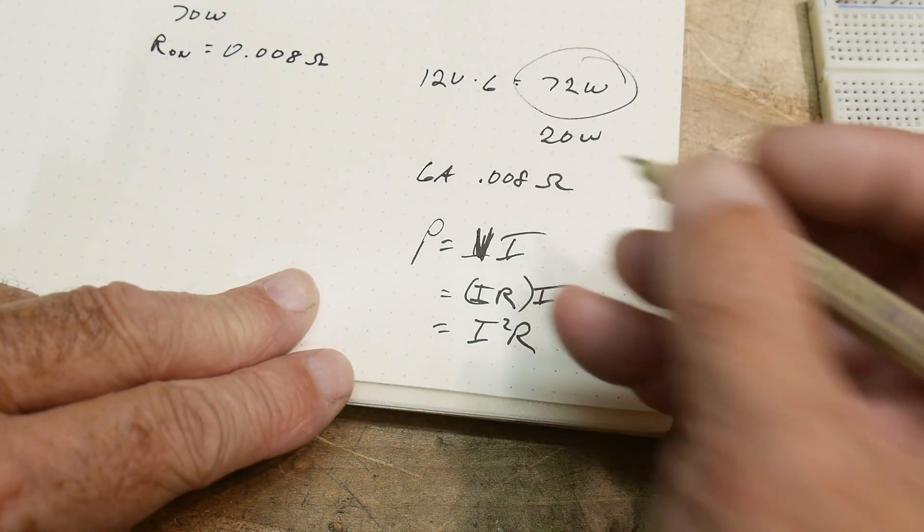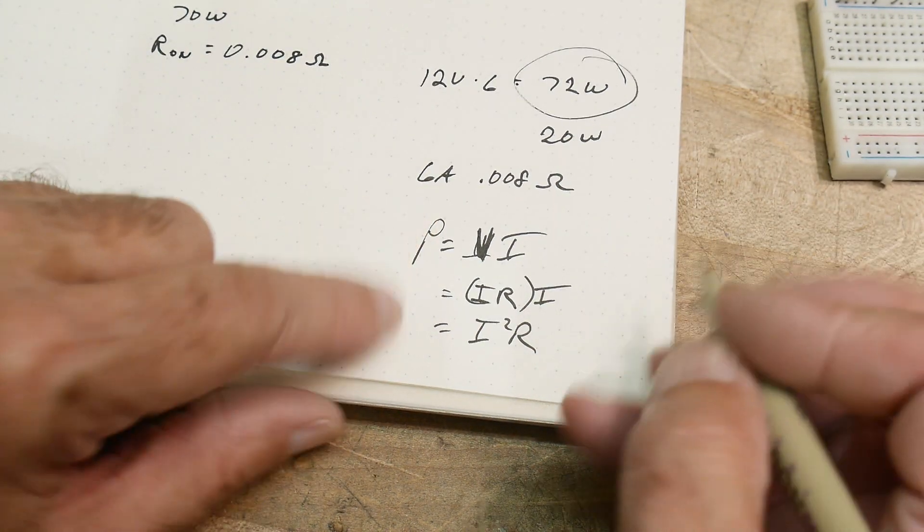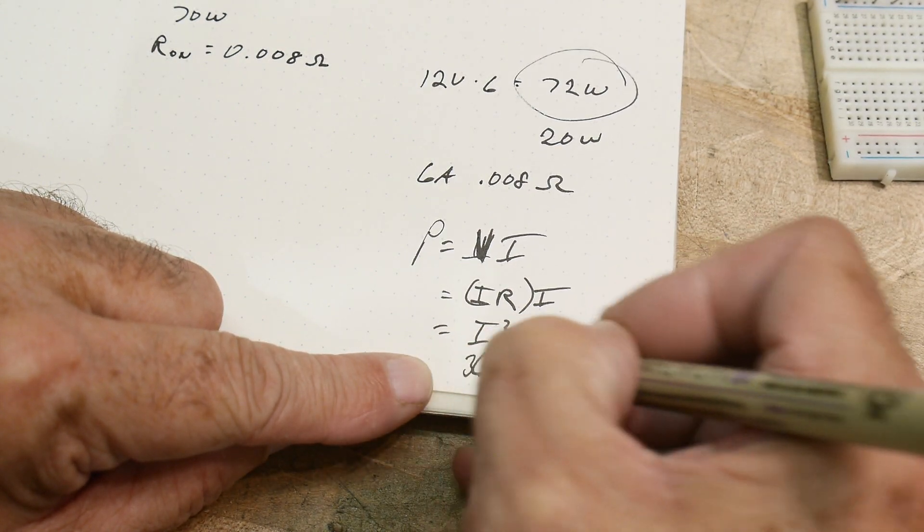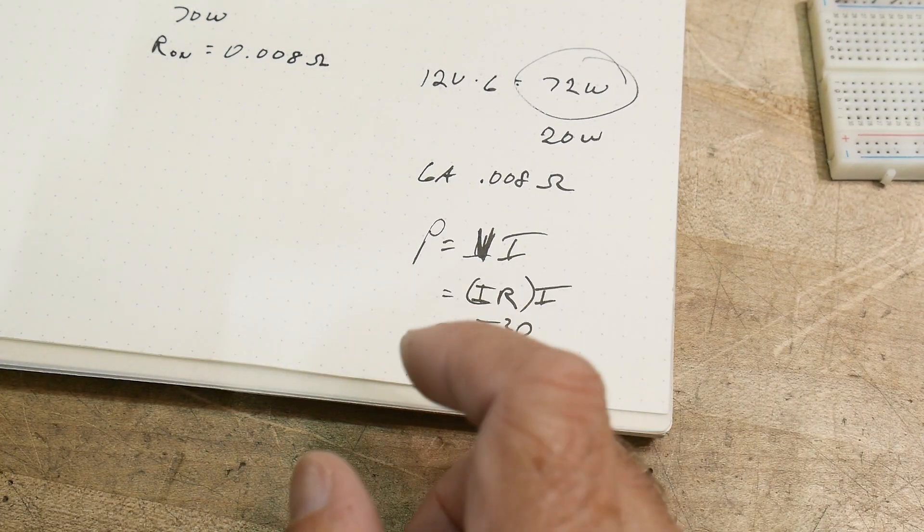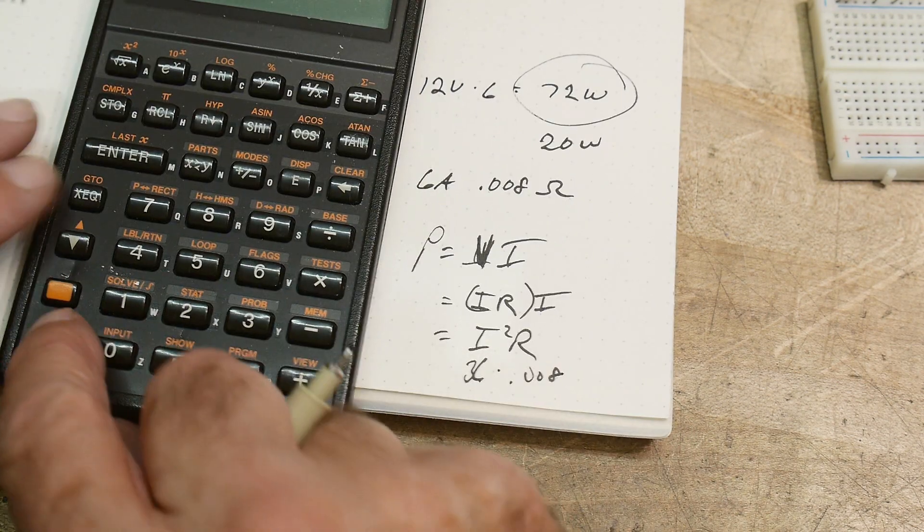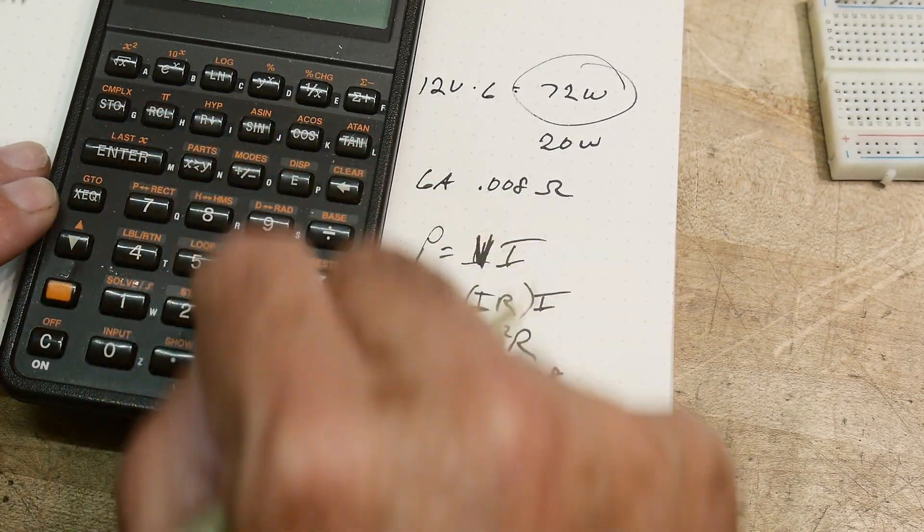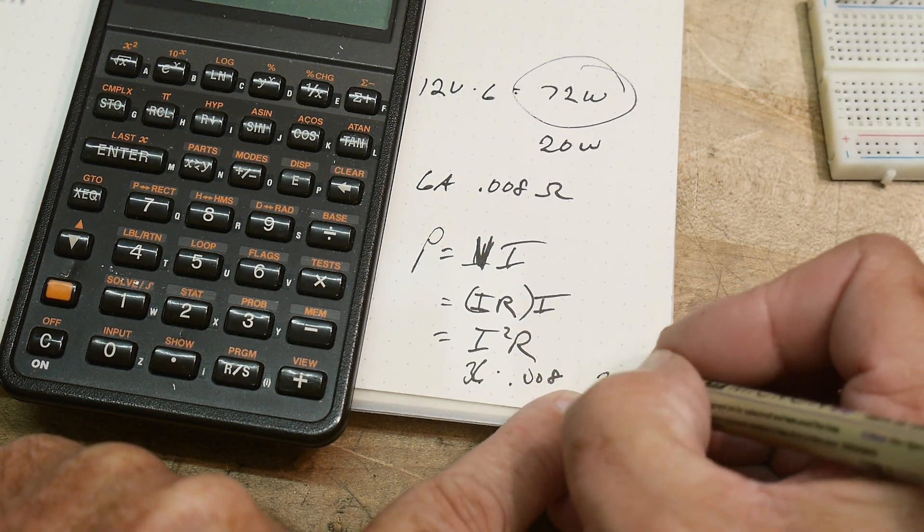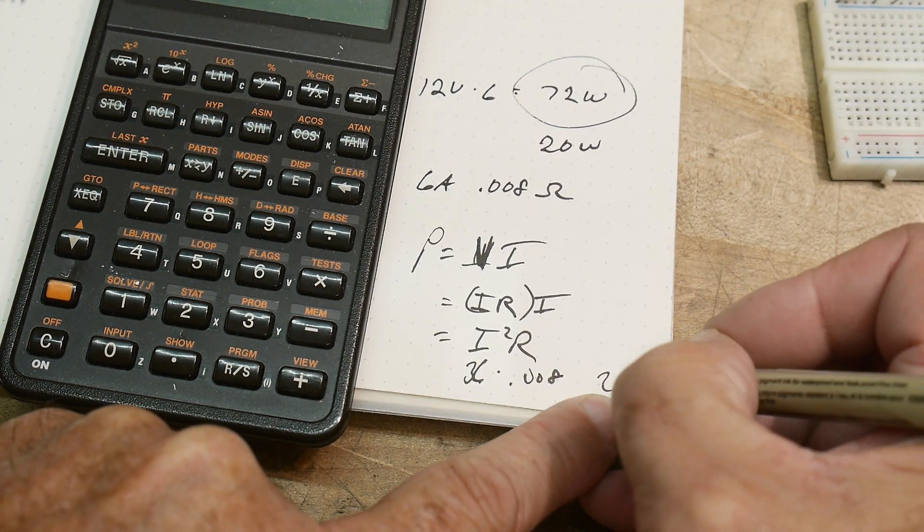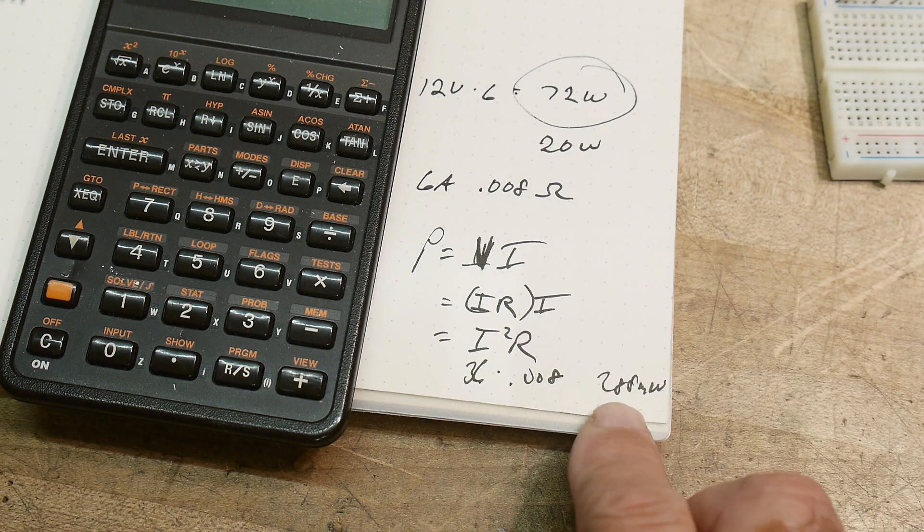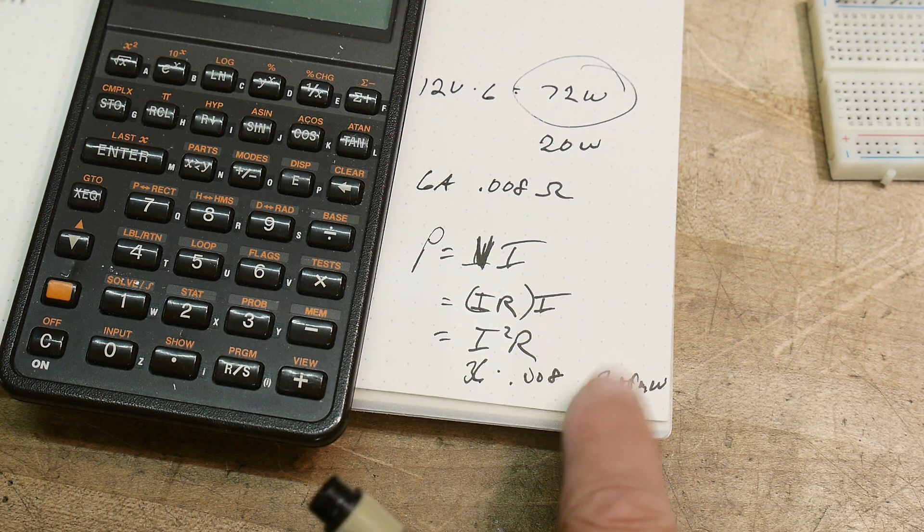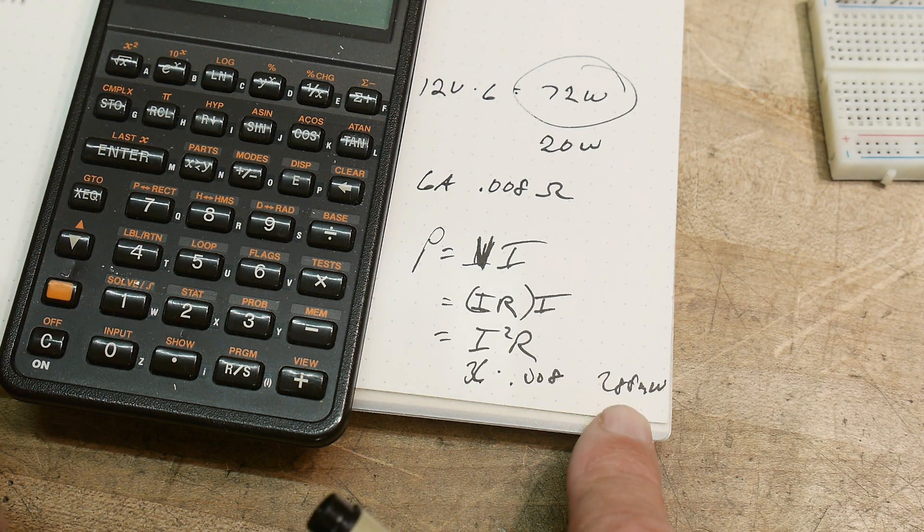Well, what do we have? We have I squared. We have six amps squared is 36. 36 times 0.008. Okay. Let's do that. 36 times 0.008. We have 288 milliwatts. Okay. A quarter of a watt. So very, very tiny amount of power in the actual device itself.